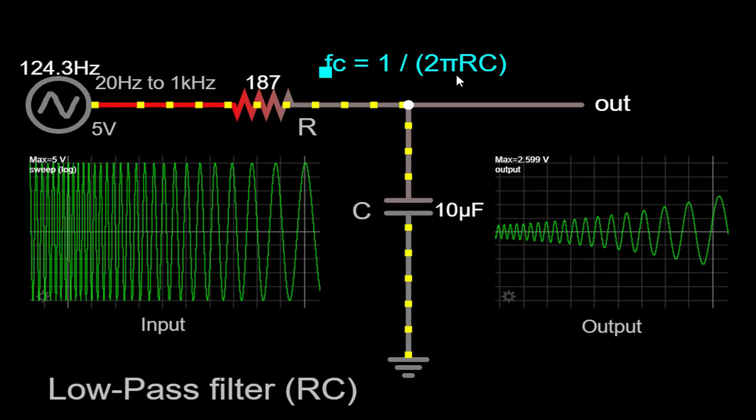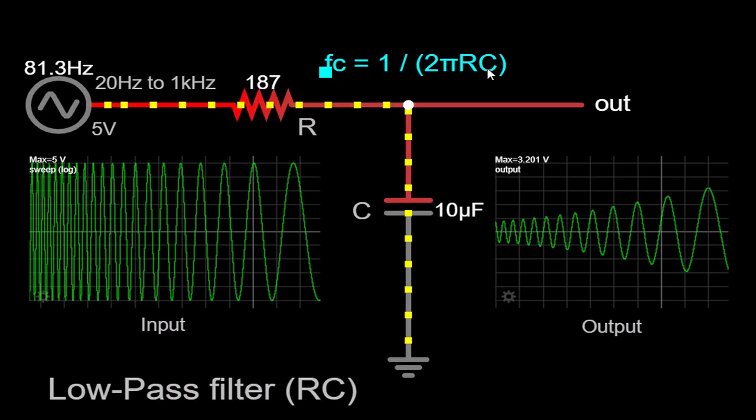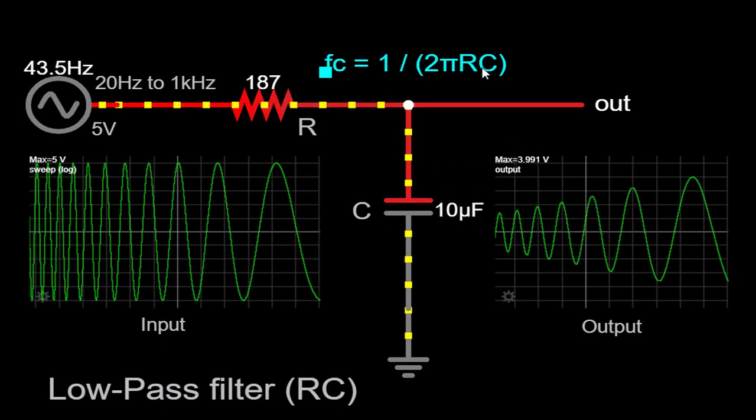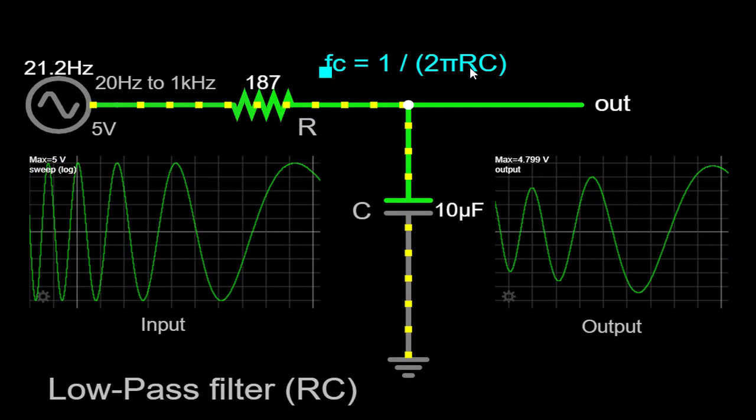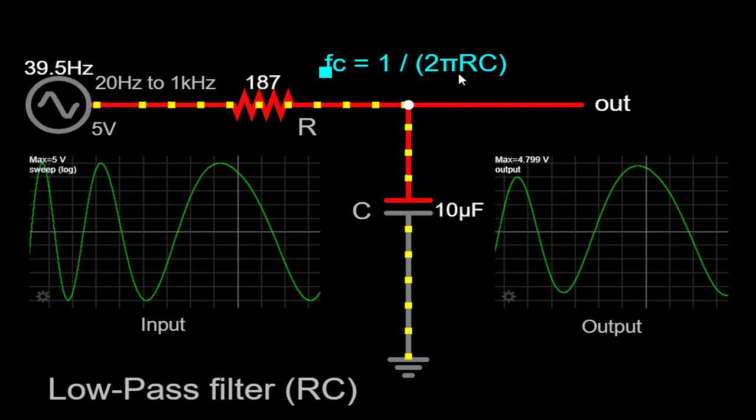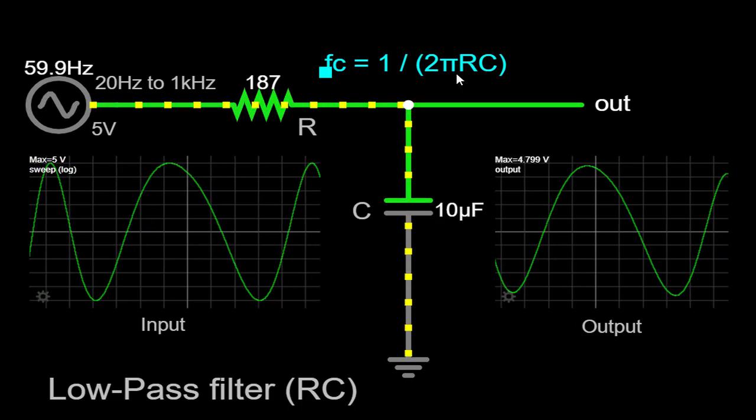By choosing appropriate values for R and C, you can adjust the cutoff frequency of the filter to suit your specific requirements. Lower resistance or higher capacitance values will result in a lower cutoff frequency, allowing lower frequency signals to pass through.